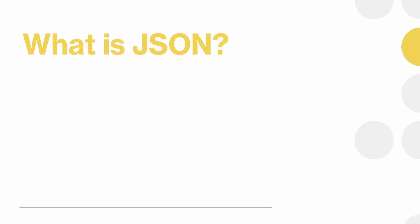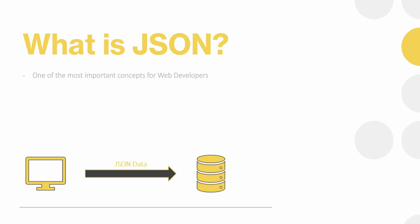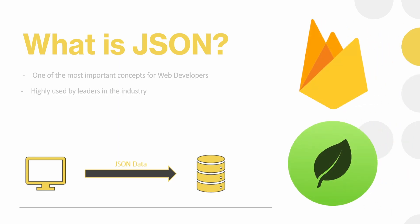Let's talk about the JSON basics. First of all, what is JSON? Well, JSON or JavaScript Object Notation is probably one of the most important concepts that we need to learn as web developers. It is the format used to store and transmit data between users, which means that it will transmit data between client and the server side. It is also highly used by leaders in the industry like MongoDB or Firebase.